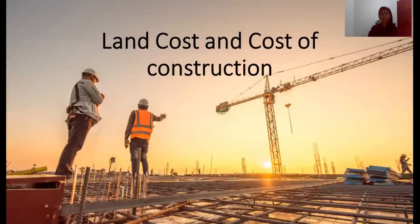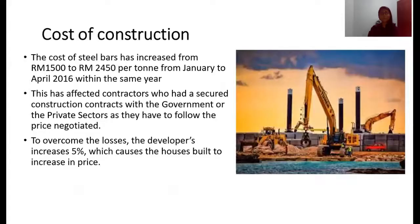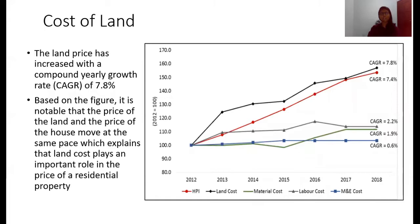The next factor is land cost and cost of construction. In a case study from 2016, the cost of steel bar increased from RM1,500 to RM2,450 per tonne from January to April 2016. This affected contractors with secured construction contracts, as they had to follow the negotiated price. To overcome losses, developers increased prices by 5%, causing houses being built to increase in price. The land price has also increased with a compound yearly growth rate of 7.8%, and it is notable that land price and house price move at the same pace, showing that land costs play an important role in residential property pricing.